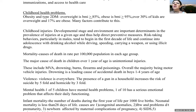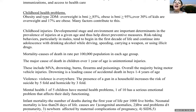Childhood injuries: developmental stage and environment are important determinants in the prevalence of injuries at a given age and thus help to direct preventative measures. Risk-taking behaviors, particularly in males, tend to begin in the first decade of life and continue into adolescence, with drinking alcohol while driving, speeding, carrying a weapon, or using illicit drugs.